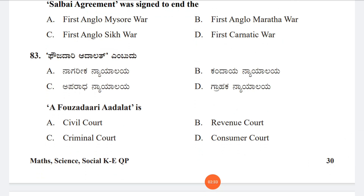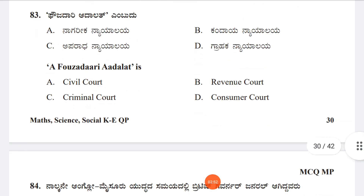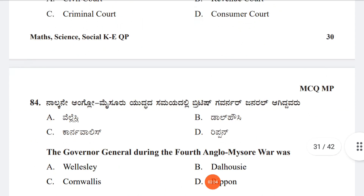Question 83: What is a Faujdari Adalat? Option A: Civil Court, Option B: Revenue Court, Option C: Criminal Court, Option D: Consumer Court. The answer is C, Criminal Court. Faujdari Adalat means criminal court in the period of British rule.